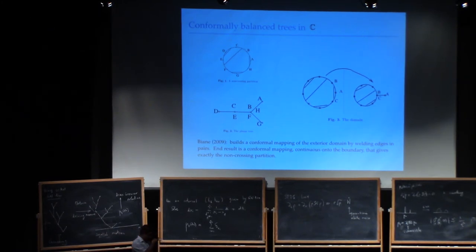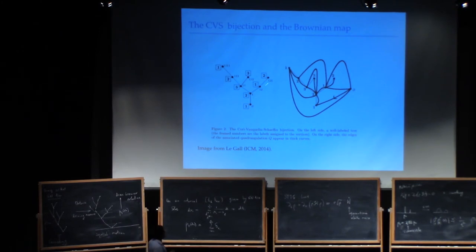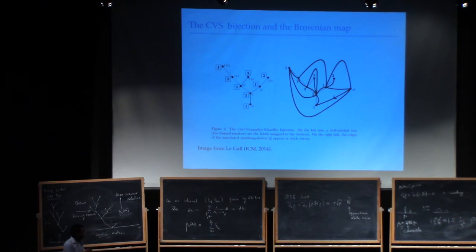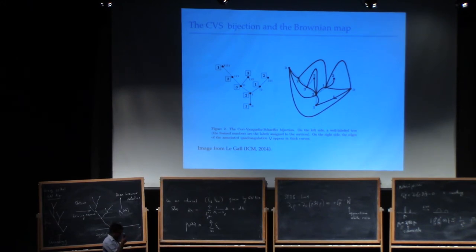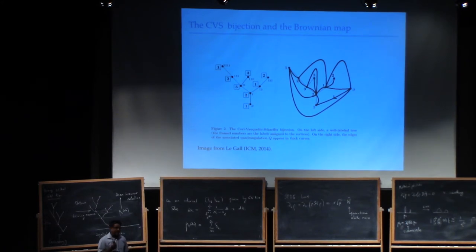The really interesting thing is not just having trees, but having labellings on them. There's the amazing work of Lagarde and Miermont on a fundamental bijection from labeled planar trees to quadrangulations. My claim is that if you know how to embed the tree, putting on the labeling gives you a very clean, conformal way of doing this bijection.